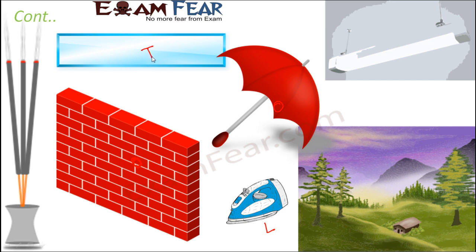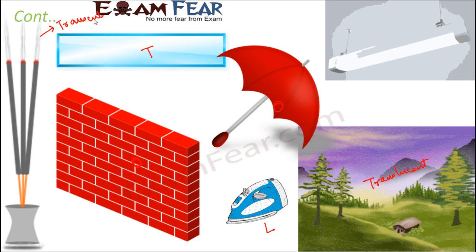What about fog? On a foggy morning you are able to see things but everything appears hazy. That's because fog is translucent — it is neither transparent nor opaque. Similarly, smoke is also translucent because you can see other objects through smoke but not very clearly, giving an unclear or hazy display.